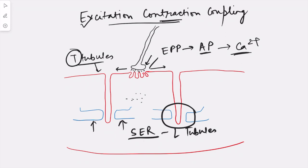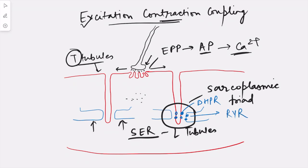There is one T-tubule and two L-tubules, and this is known as the sarcoplasmic triad, which is responsible for the release of calcium. On the T-tubules are present receptors known as DHPR — dihydropyridine receptors — and on the L-tubules are present channels known as RYR, or ryanodine receptors. When the action potential travels along the membrane, there is physical interaction between the DHPR and RYR, which causes the opening of these RYR channels.